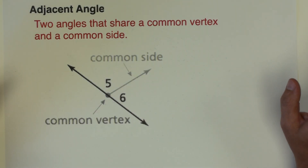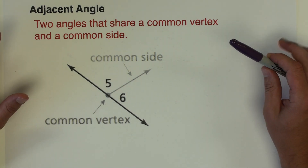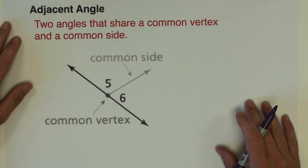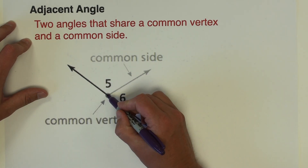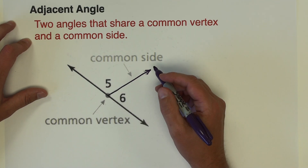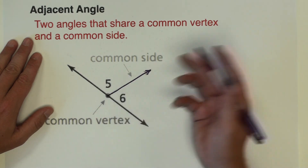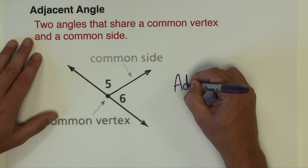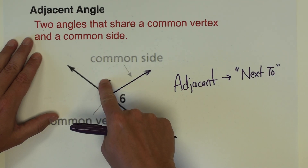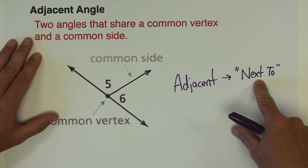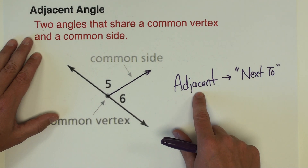We're going to end this video with some vocabulary that we need to know — these terms are going to be very commonplace and we're going to use them a lot. The first one is adjacent angles. Adjacent angles are simply two angles that share a common vertex and a common side. There's a ray that is a side to both angles and the vertex is the same in both angles. You can think of adjacent as just meaning next to — angle five and angle six are right next to each other, essentially touching on that common side.